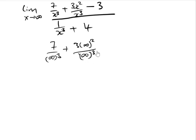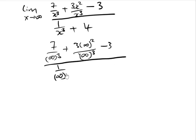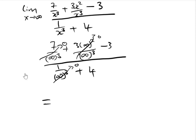Substituting x to infinity, all terms with x in the denominator go to zero, and we are left with minus 3 divided by 4. This is my final answer.